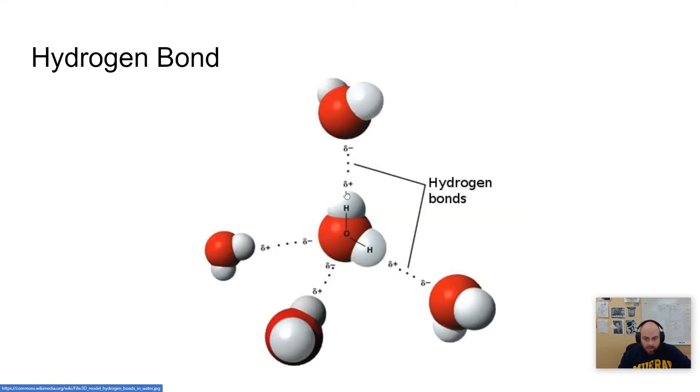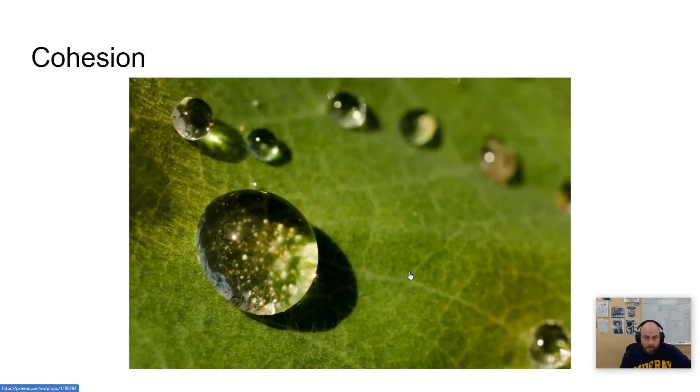and here's another example of this real quick. So here's one water molecule actually forming hydrogen bonds with four other water molecules. And so this causes water again to be highly attracted to itself. And we call this idea cohesion.